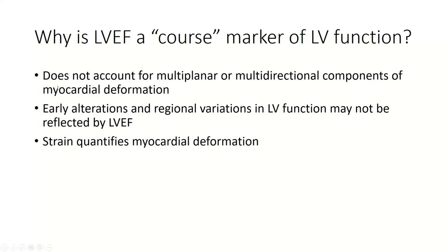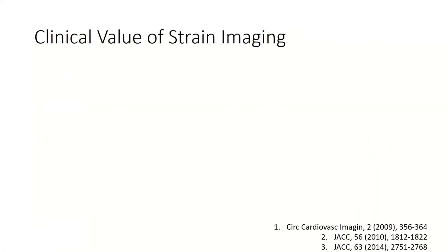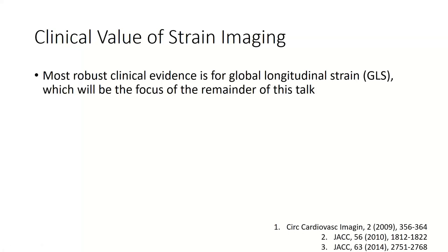Fortunately, we can quantify this myocardial deformation using strain. Strain will put a strain on your brain, so before we go through how it works and how we apply it in echo, let's remind our clinical brains why we're bothering by going over briefly its clinical value. The strain that has the most robust clinical value is global longitudinal strain — strain in the longitudinal direction — so I'll focus on that for the remainder of the talk.